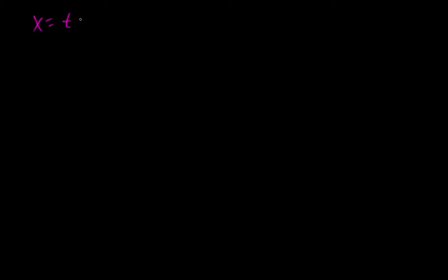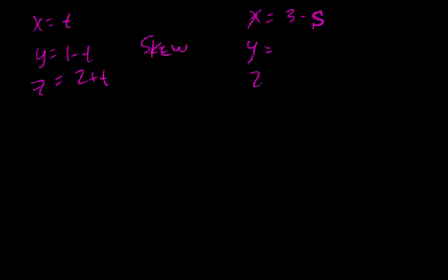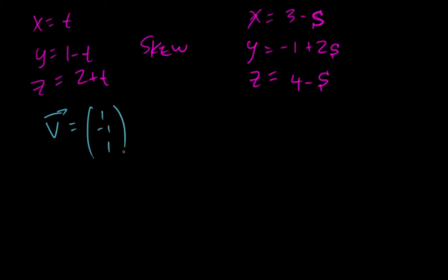We have one more problem: find the shortest distance between two lines that have been defined as skew. We can pull out their direction vectors — this one is (1, -1, 1) and this one is (-1, 2, -1) — and we're going to find the cross product of the two direction vectors.